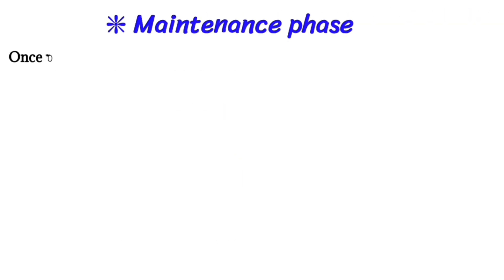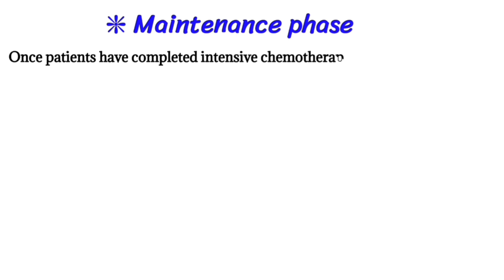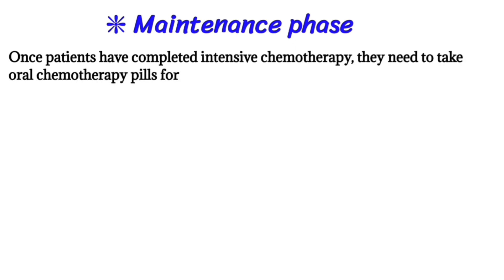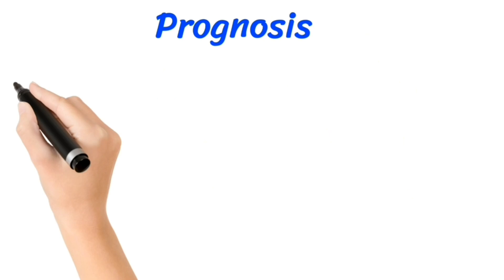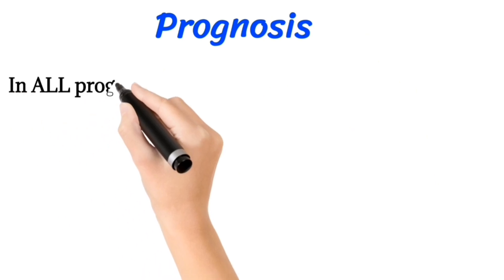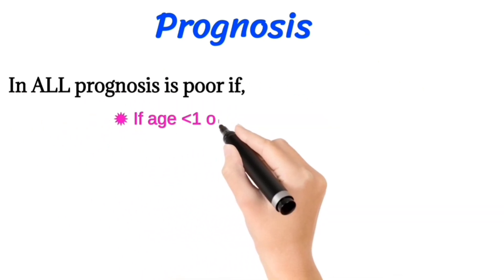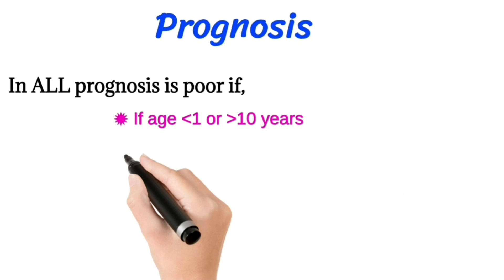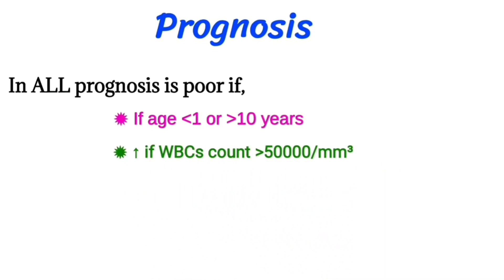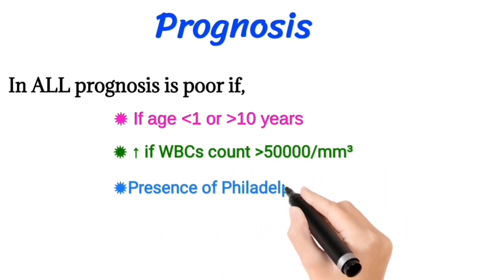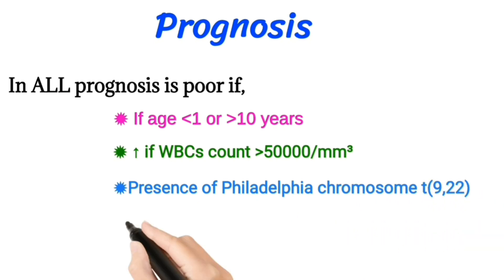Maintenance phase: once the patient has completed intensive chemotherapy, they take oral methotrexate and 6-mercaptopurine for an additional 8 to 24 months. Prognosis in ALL is poor if: age is less than one or greater than ten years, white blood cell count is greater than 50,000, Philadelphia chromosome (t9;22) is present, or there is CNS involvement at the time of diagnosis.